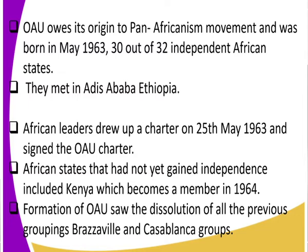The offices of the Organization of African Unity were located in Addis Ababa, Ethiopia. African leaders drew up a charter on 25th May 1963 — the same year the OAU was born — and signed the OAU charter, establishing the principles and ideals to run the organization.